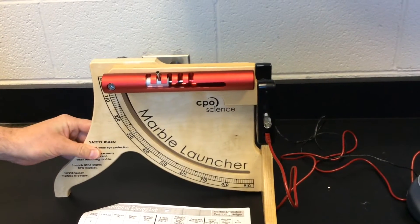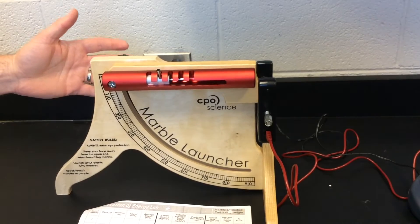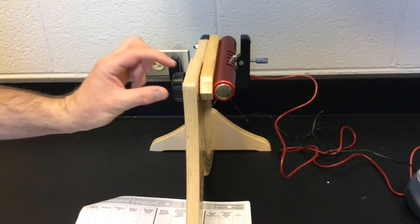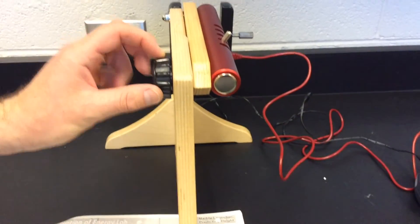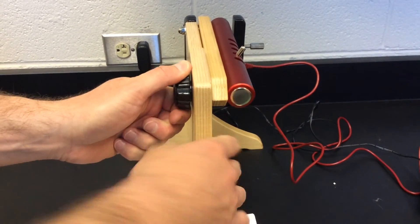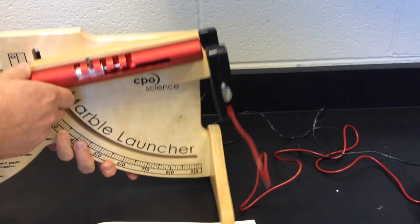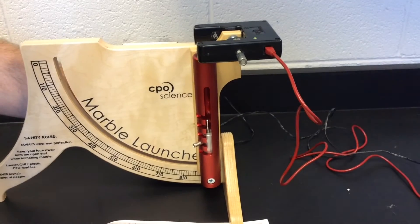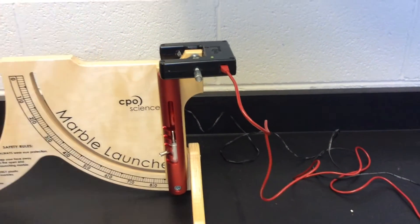The next thing we're going to do with the lab is adjust the marble launcher so that we can shoot the marble straight up in the air. There's a thumb screw on the left hand side of the marble launcher and you're going to unscrew that and then you can change the angle. We're going to change the angle to 90 degrees when we shoot the marble straight up.